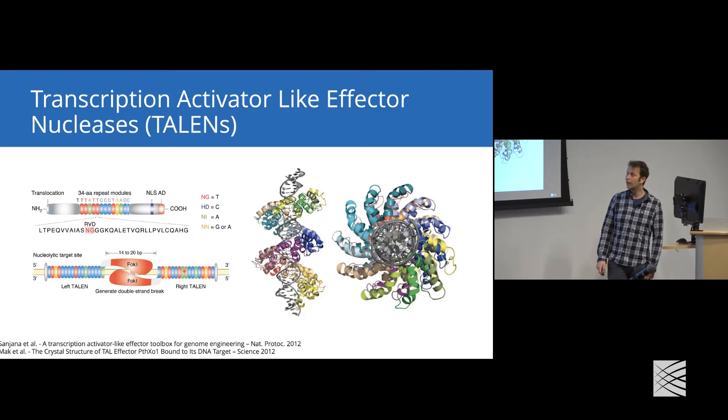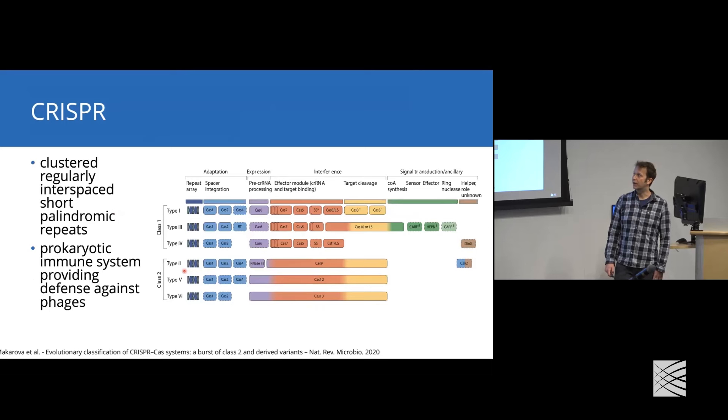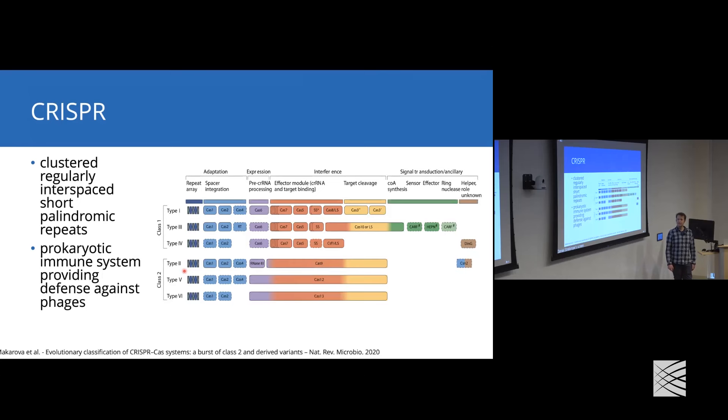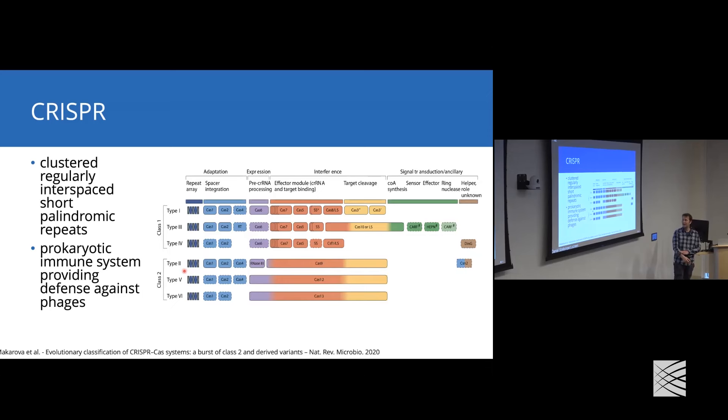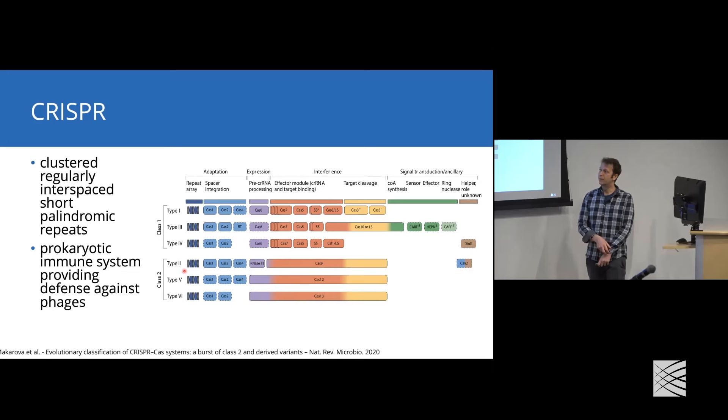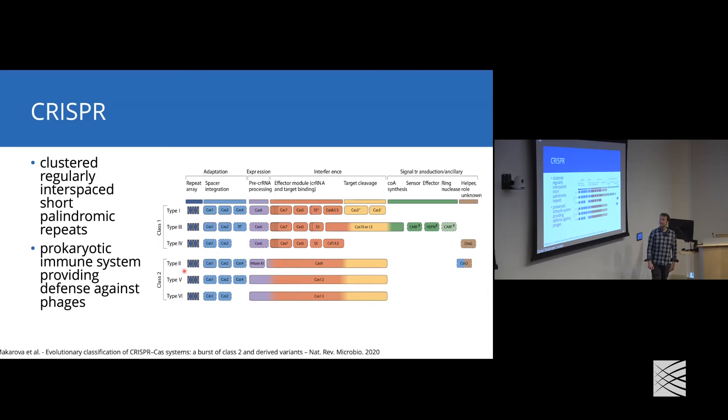These enzymes were very promising but assembling 20 repeats in the lab is time-consuming. People were still hunting for other systems that could be easier to engineer. That's when CRISPR came along. CRISPR, initially identified as repeats in the bacterial genome, stands for Clustered Regularly Interspaced Short Palindromic Repeats. It turned out that CRISPR is a prokaryotic immune system that allows bacteria and archaea to defend against phages.